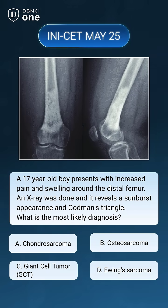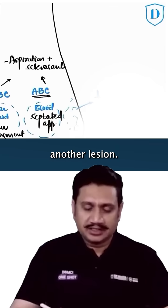A 17-year-old boy presents with increased pain and swelling around the distal femur. An X-ray was done and it reveals a sunburst appearance and Codman's triangle. What is the most likely diagnosis? Then we have another lesion where you see the rays of the Sun coming from the surface, and this is simply called osteosarcoma.